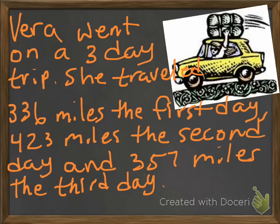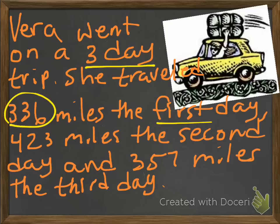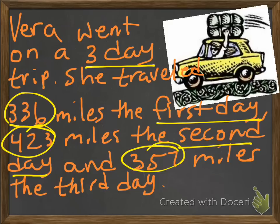So, let's take a look at our first example here. Vera went on a three-day trip, and she traveled 336 miles the first day, 423 miles the second day, and 357 miles the third day.